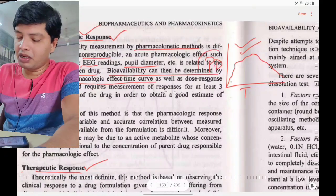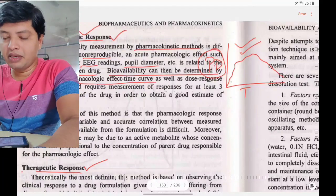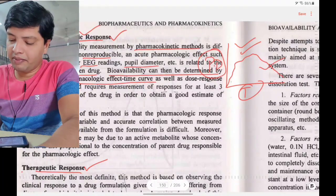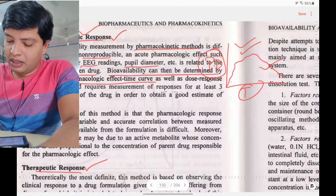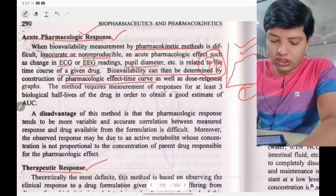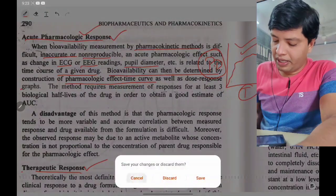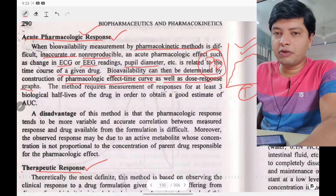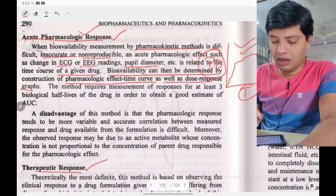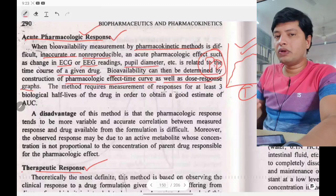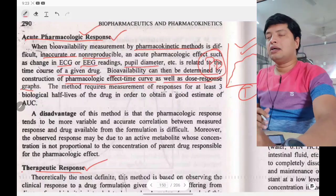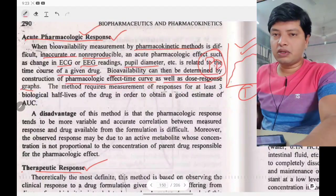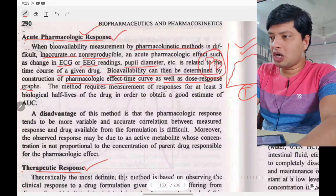The pharmacological effect, such as pupil diameter, is plotted against the time curve. You can also use dose-response graphs: give multiple doses and check how the response changes. This is how you draw the graph for the acute pharmacological response method — observing the short-term pharmacological response.